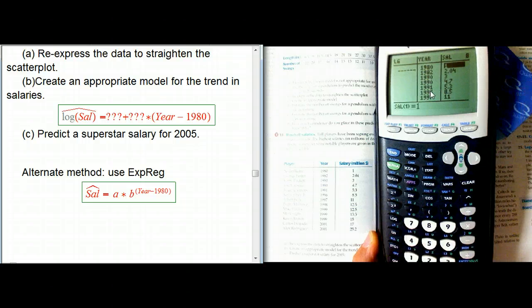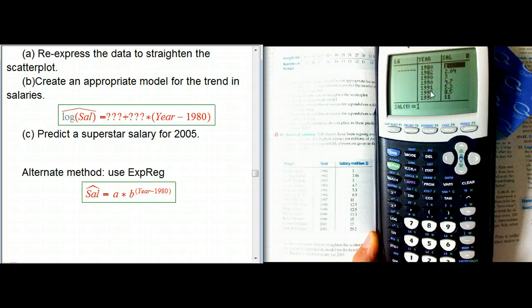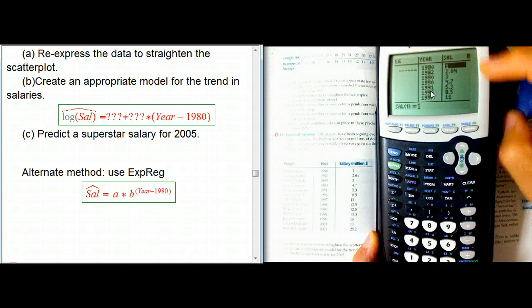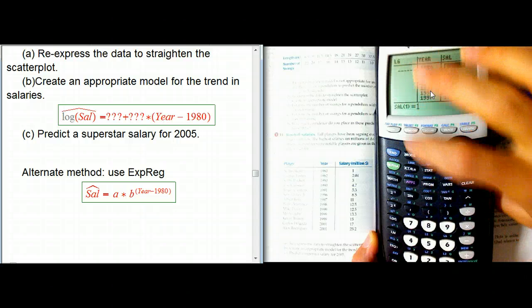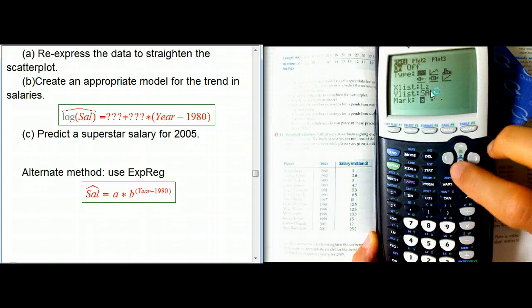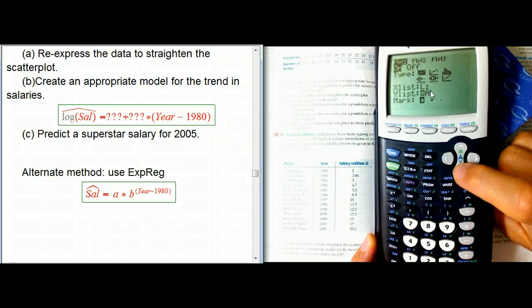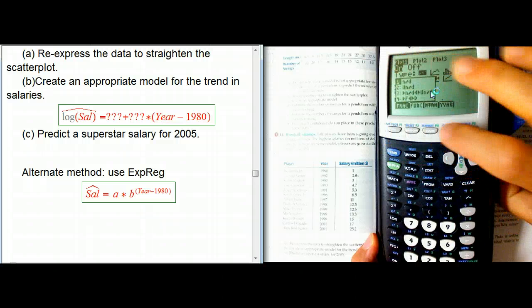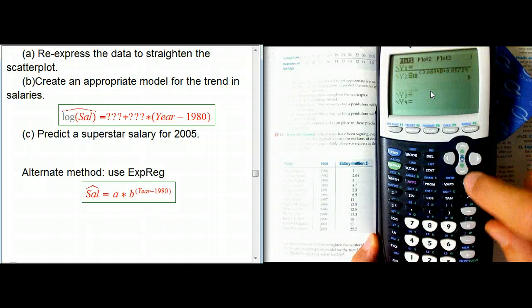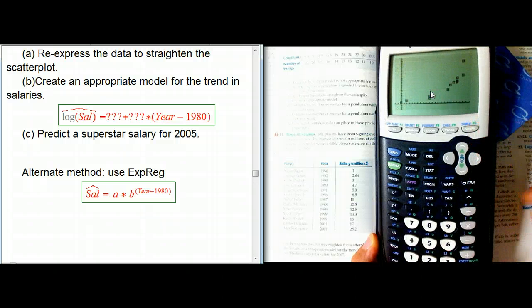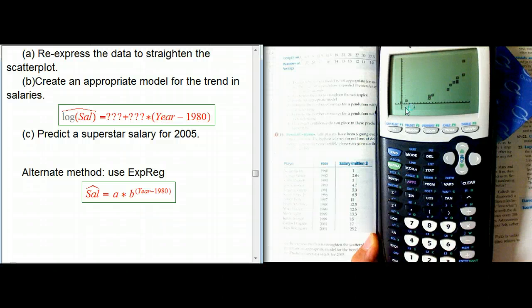Let's do a scatter plot of L2, the year minus 1980, versus the salary. There's our plot. It starts at year 0, salary $1 million, and goes up to $25.2 million. This does look like it has an upward curvature to it. We should probably try to re-express it first.